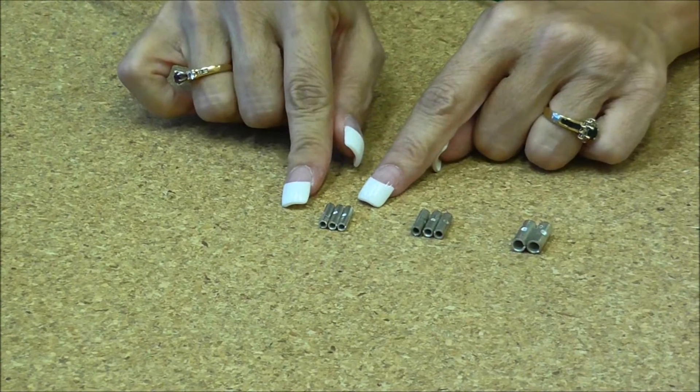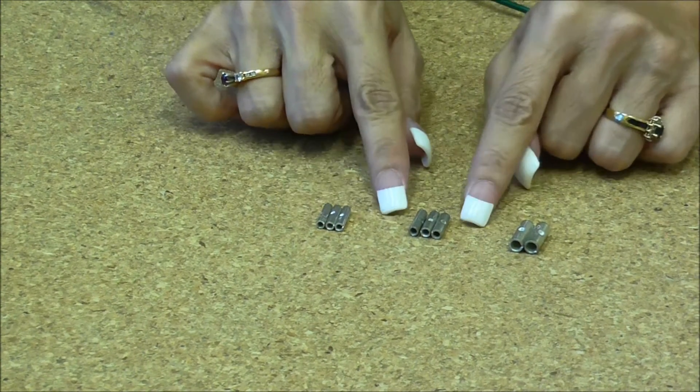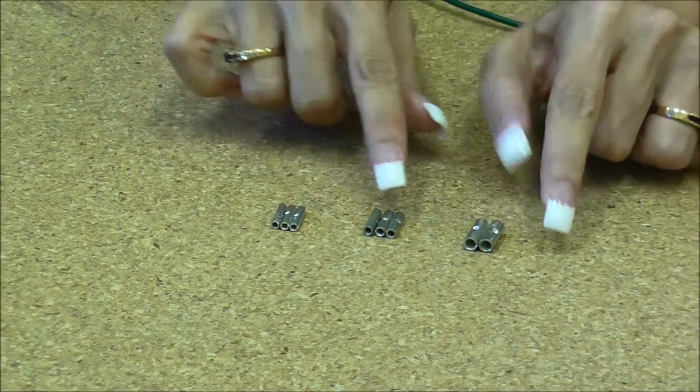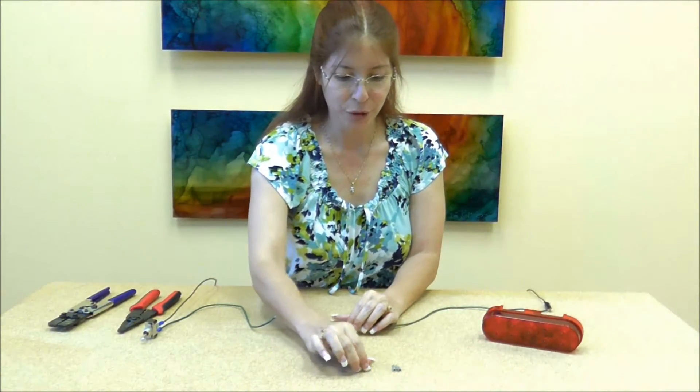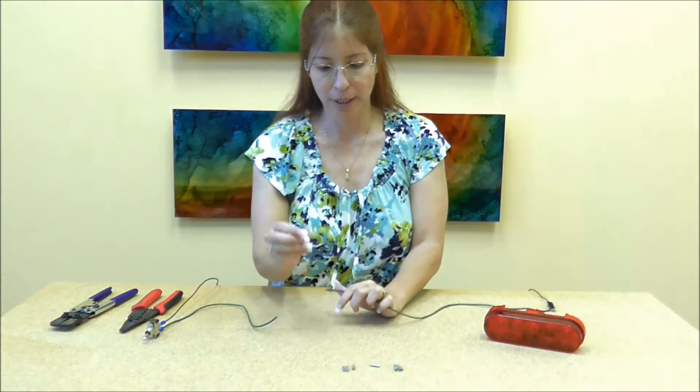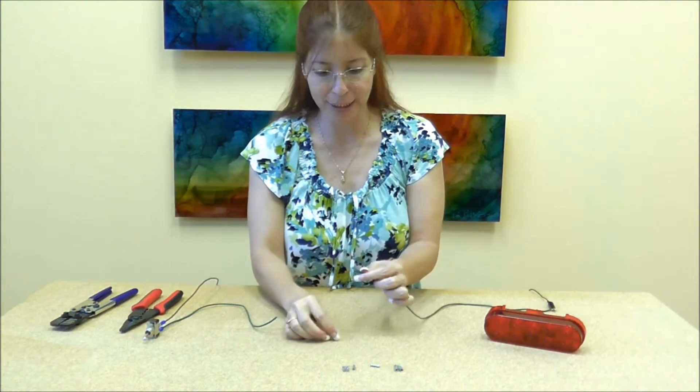They can be soldered or crimped and today we're going to crimp them. These are 18-22 gauge, these are 16-14 gauge, and these are 12-10 gauge. I'm going to use this 16-14 gauge.